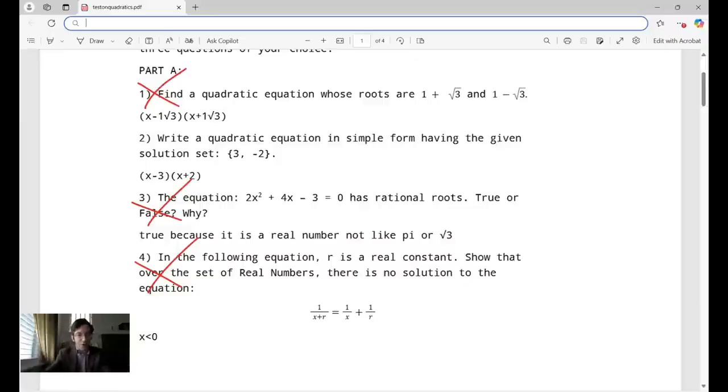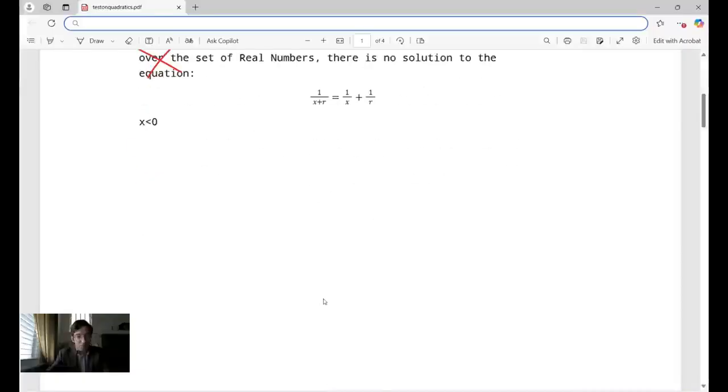Look at question number, number two was correct by the way, so that's why I didn't mention it. Number four, in the following equation R is a real constant. Show that over the set of real numbers there is no solution to this equation. The equation, in case you can't see it very well, is 1/(X+R) = 1/X + 1/R. The student wrote X is less than zero. What does that even mean? I have no idea what that means.